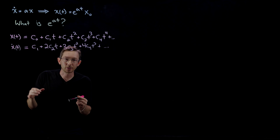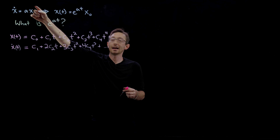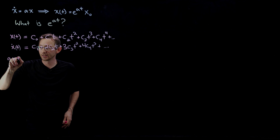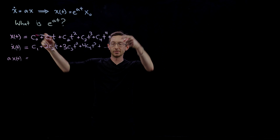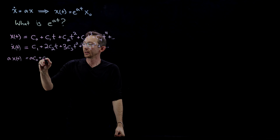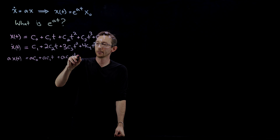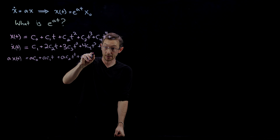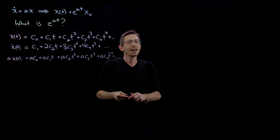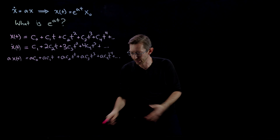Now I have x_dot and x, so I multiply x by a: a*x(t) = a*c_0 + a*c_1*t + a*c_2*t² + a*c_3*t³ + a*c_4*t⁴ + ⋯. Again, each of these series goes on forever — this is an infinite expansion in polynomials.